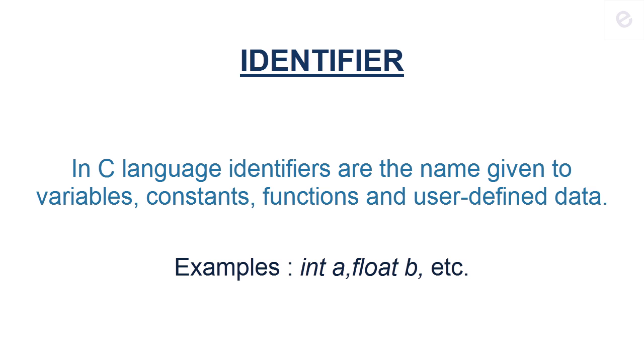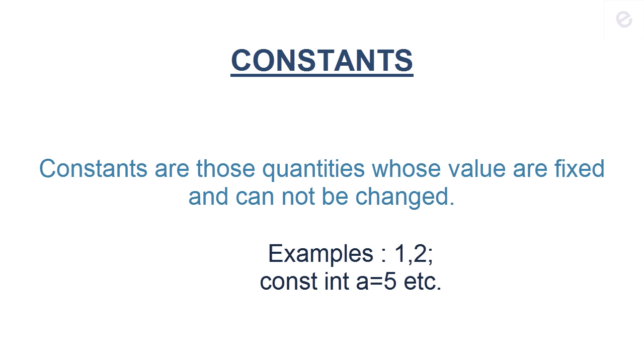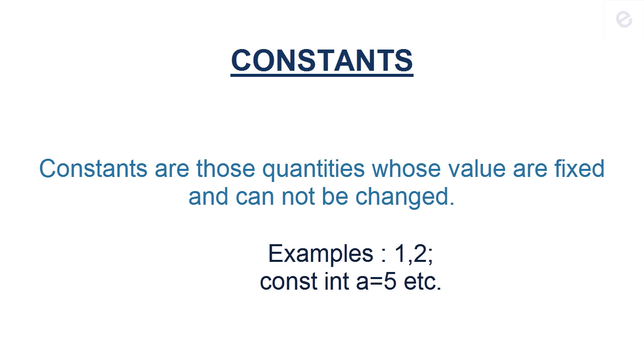Now let's talk about constants. Constants are those quantities whose values are fixed and cannot be changed or altered. If we go in detail, constants have a fixed value in memory. For example, one, two are constants - we cannot change their values. If we add the keyword 'const' in front of 'int a' or anything, then it is also a constant whose value cannot be altered. Here, 'const int a = 5' - now in any proceeding programming we cannot change the value of a.